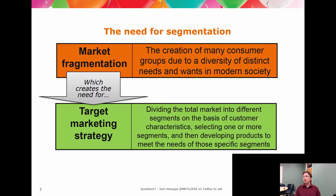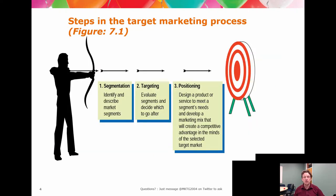What you want to be doing here is the STP process — segmentation, targeting, and positioning. We're going to start with segmentation, because we want to be able to look at a market, divide it into smaller units, and describe those smaller units.